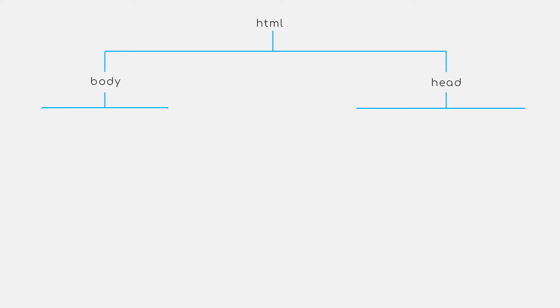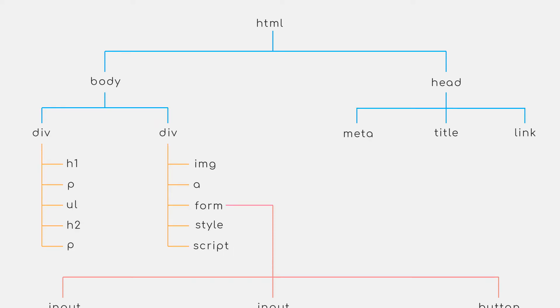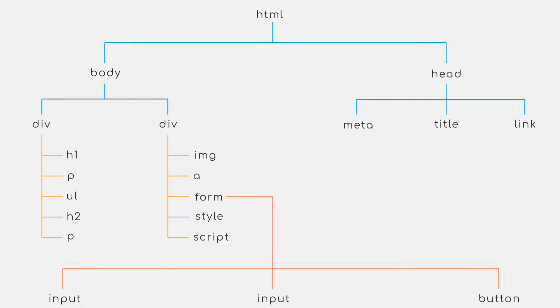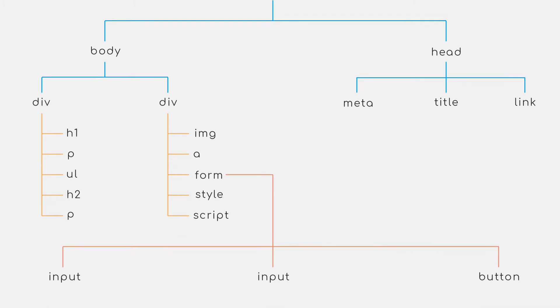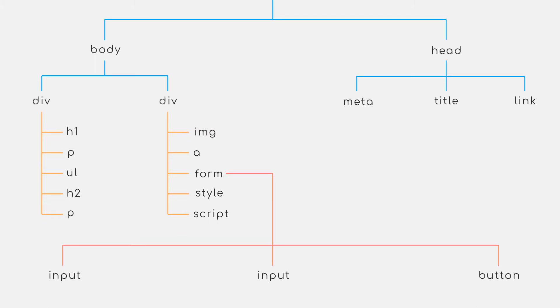Just like every markup language, HTML has a tree-like structure, in which tags are nested in one another, giving it a sort of tree-like structure.